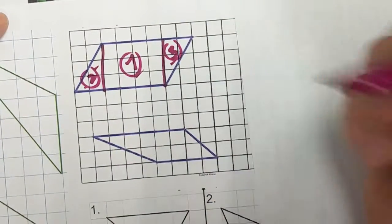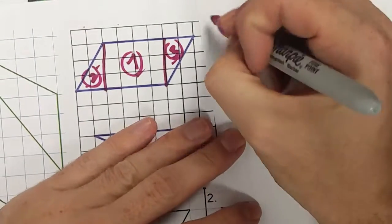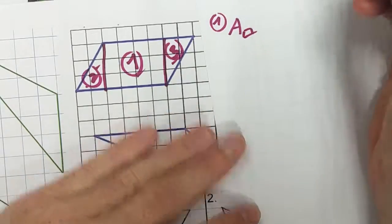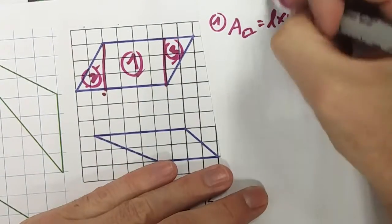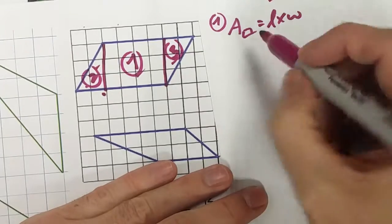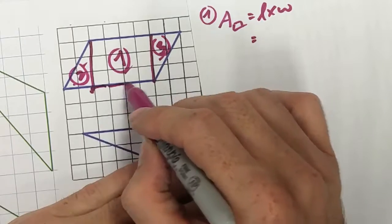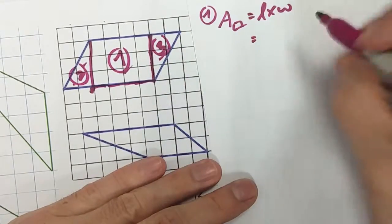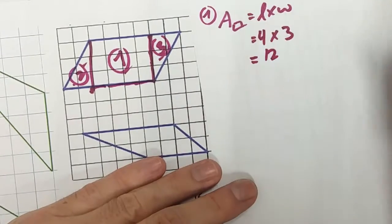So let's do that. First thing I need to know is, let's for number one, what is the area of my rectangle? And my rectangle is of course length times width, or you can think base times height. I have a length of four and a height of three, so it's going to be four times three, a total area of 12.